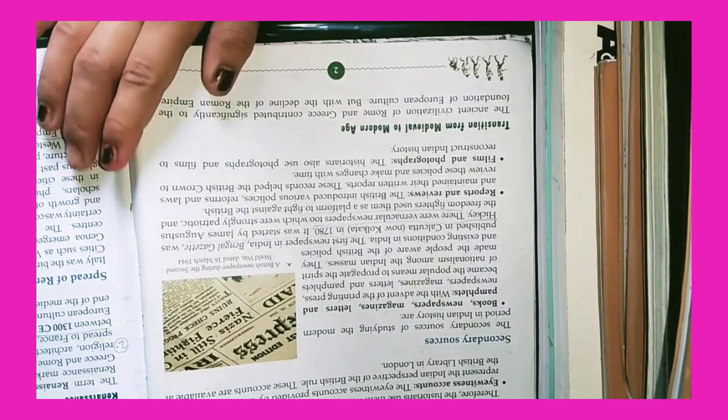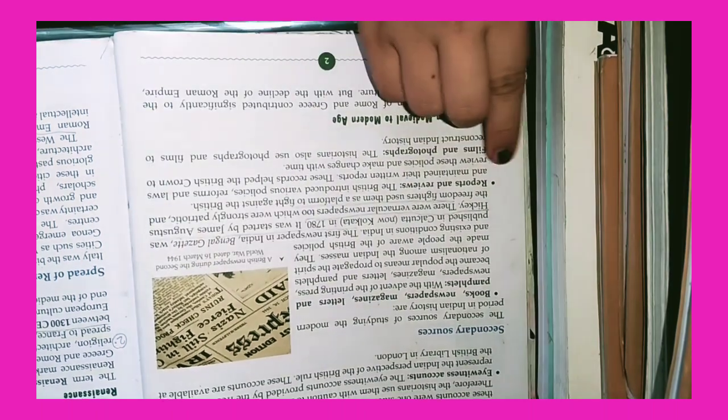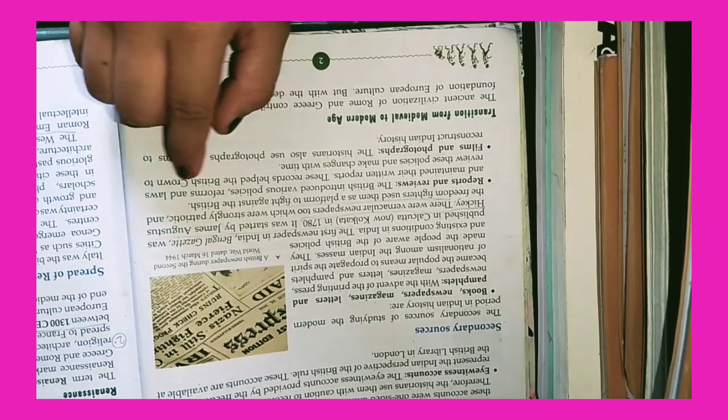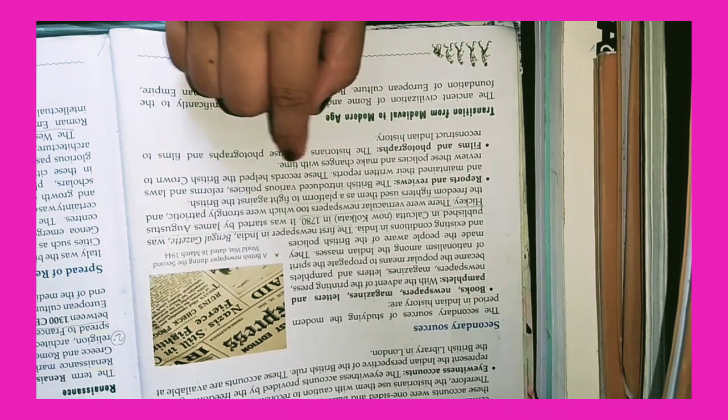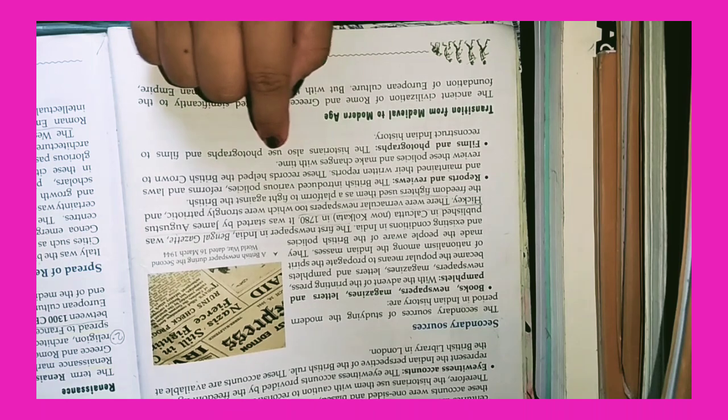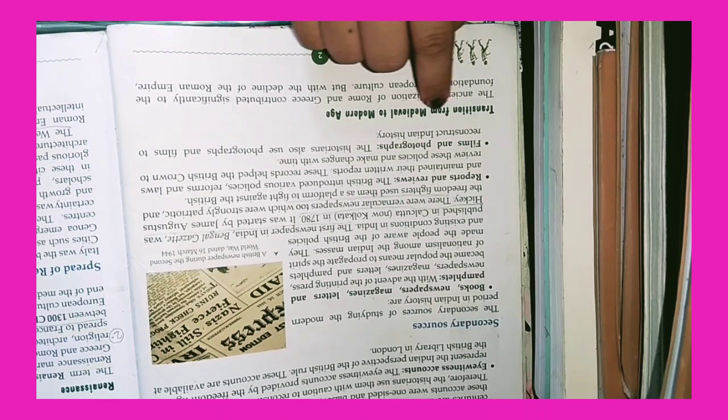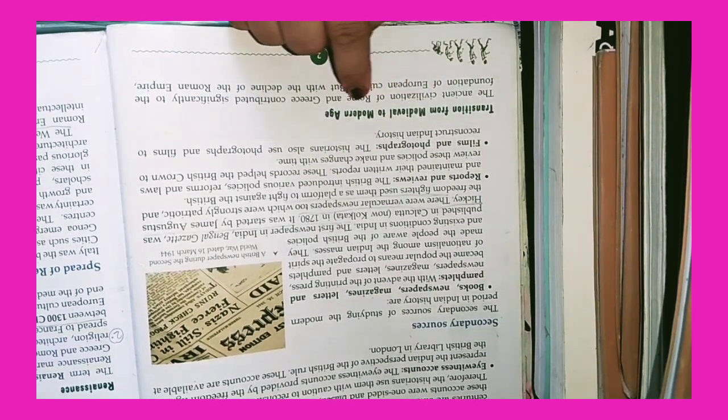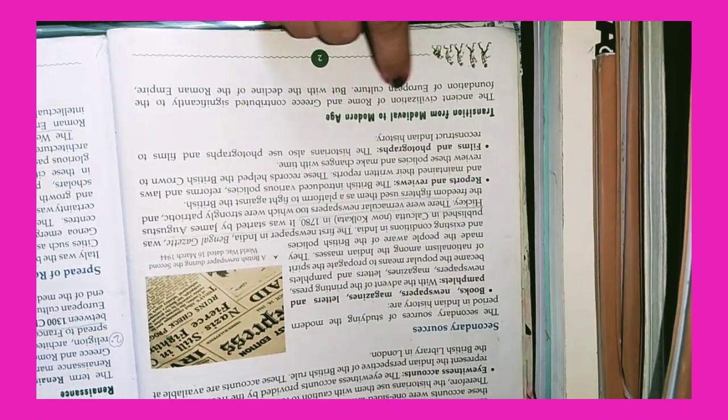Reports and Reviews: The British introduced various policies, reforms and laws and maintained their written reports. These records helped the British Crown to review these policies and make changes with time. Films and Photographs: The historians also used photographs and films to reconstruct Indian history.